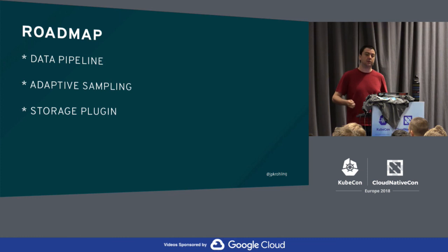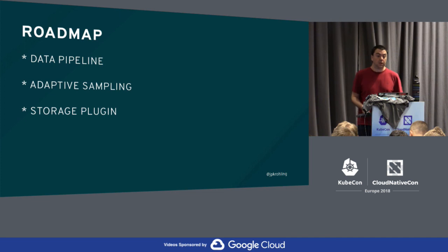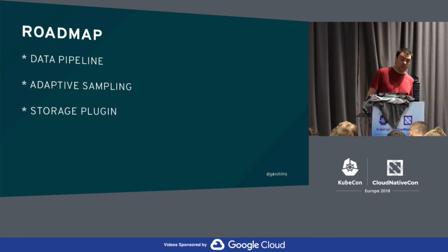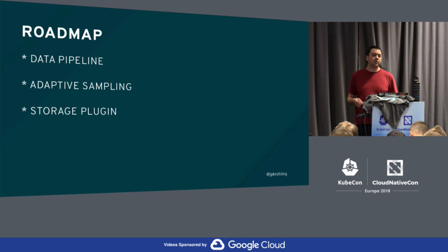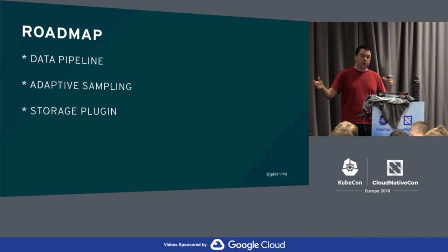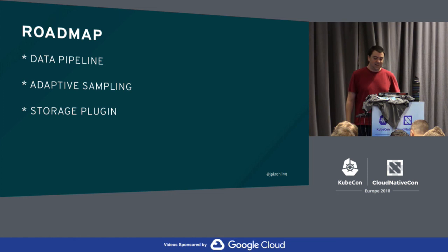The third roadmap item is the storage plugin, which is quite hot right now and we're actively working on it. We're trying to figure out the best way of doing storage plugins for our backend, which is a Go application. The preferred approach was Go plugins, but the problem is if the plugin code has a dependency on package A version 1 and the main code has package A version 2, then you have both in the binary and that leads to unexpected situations.